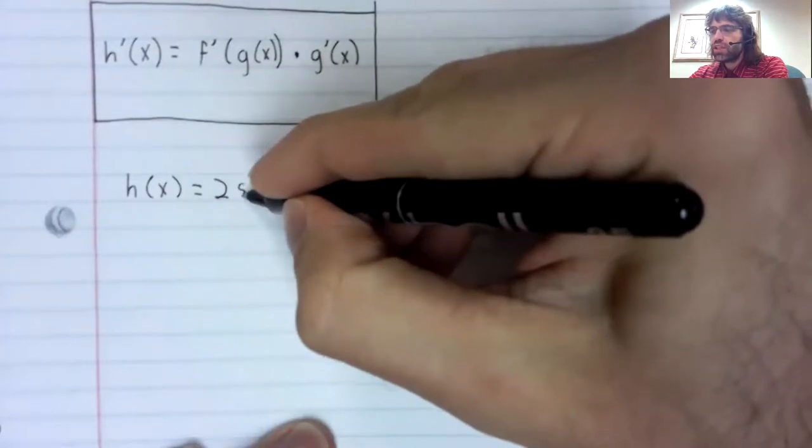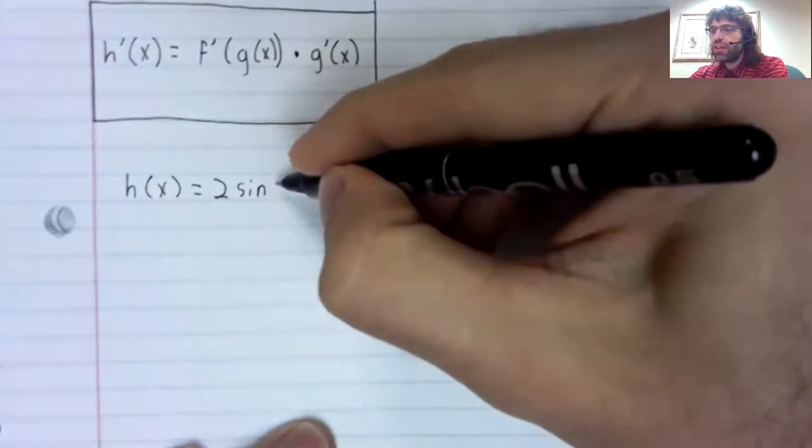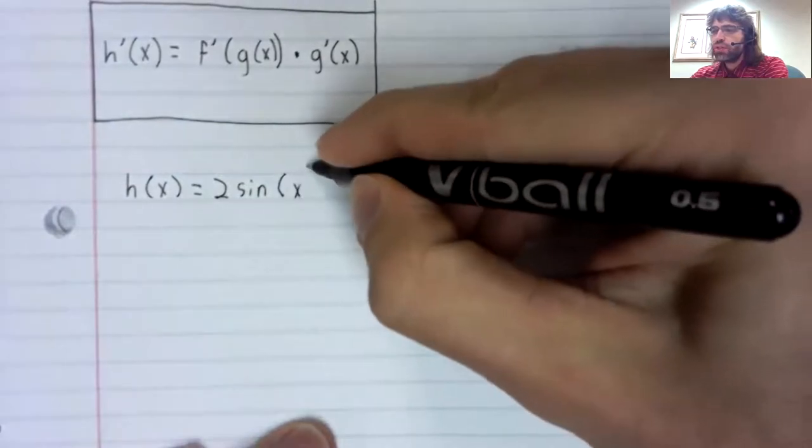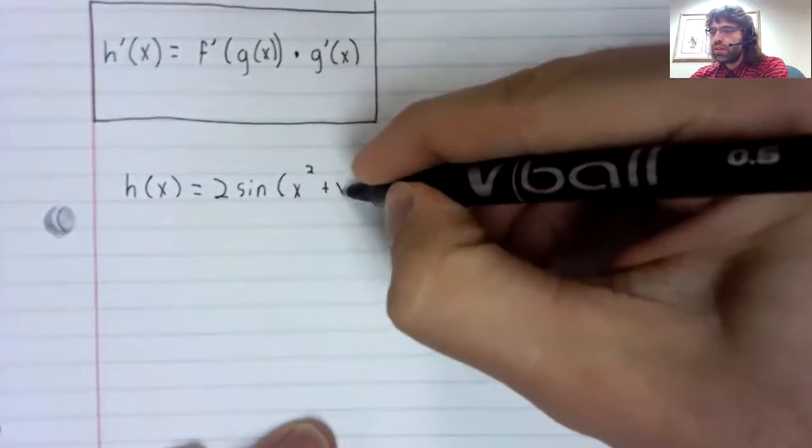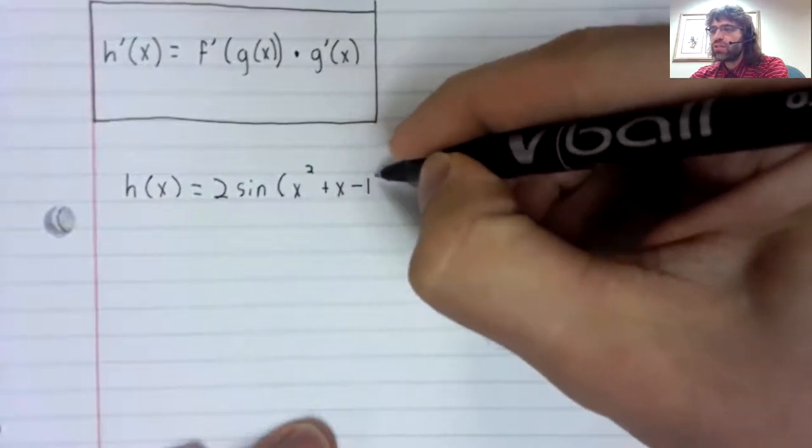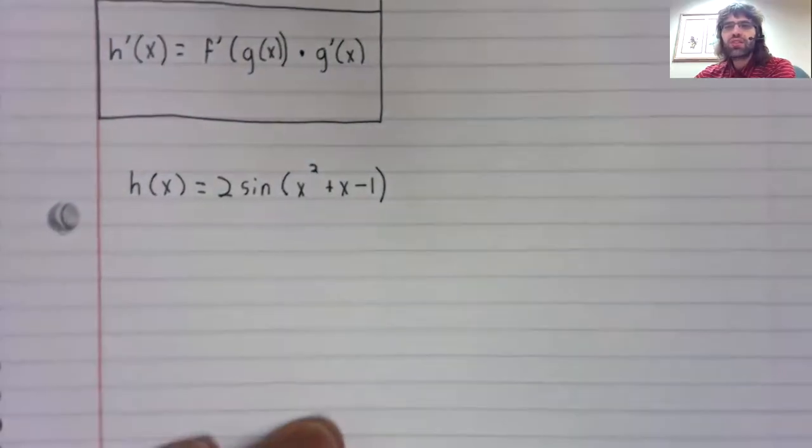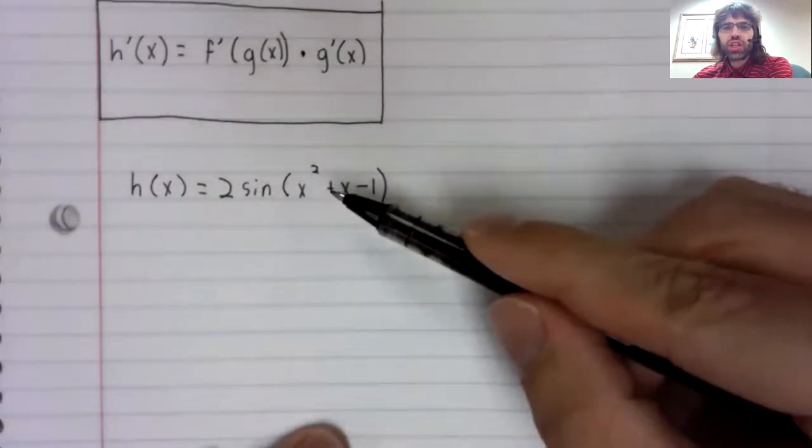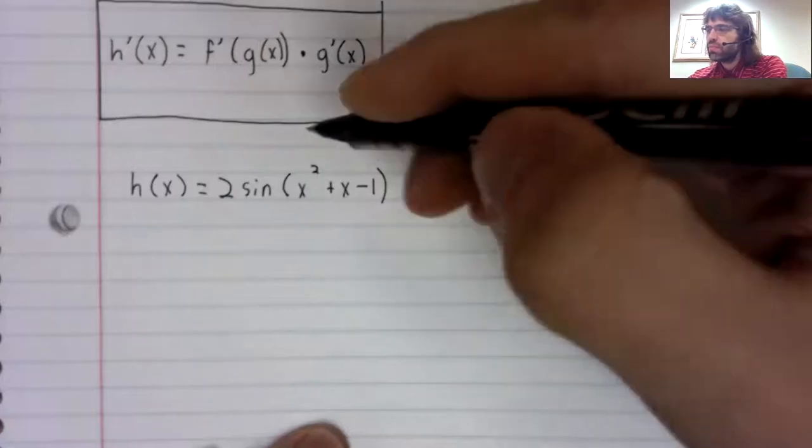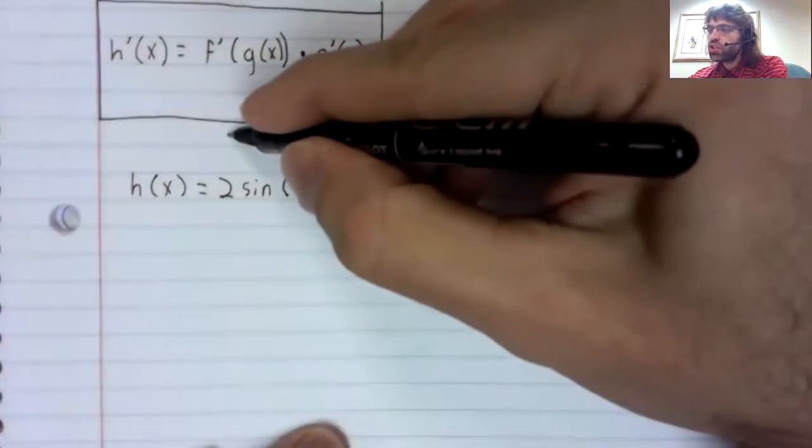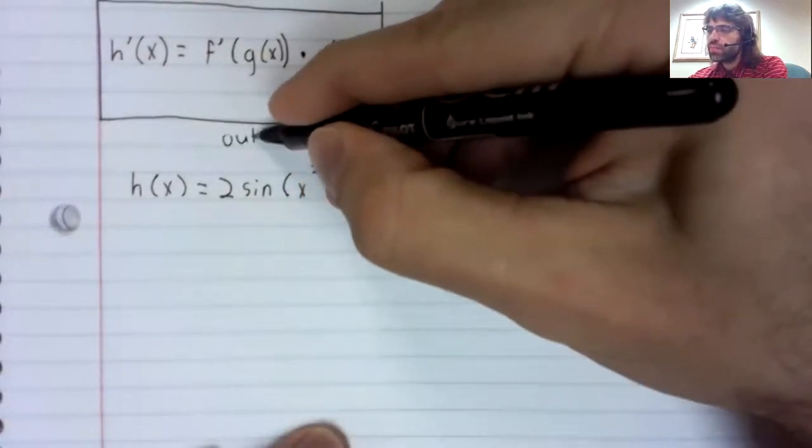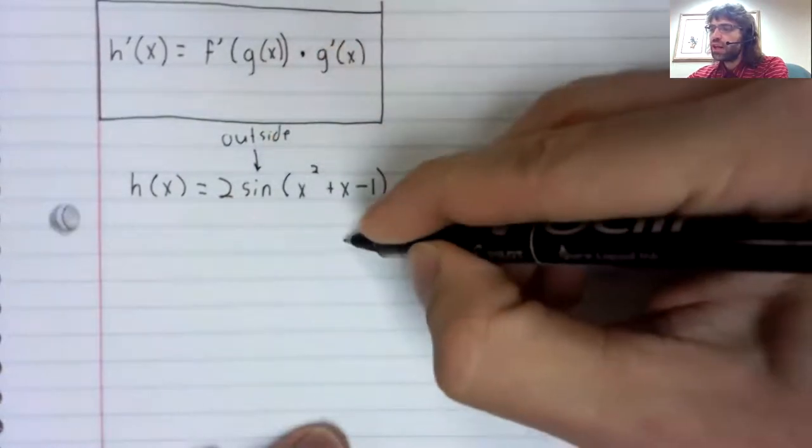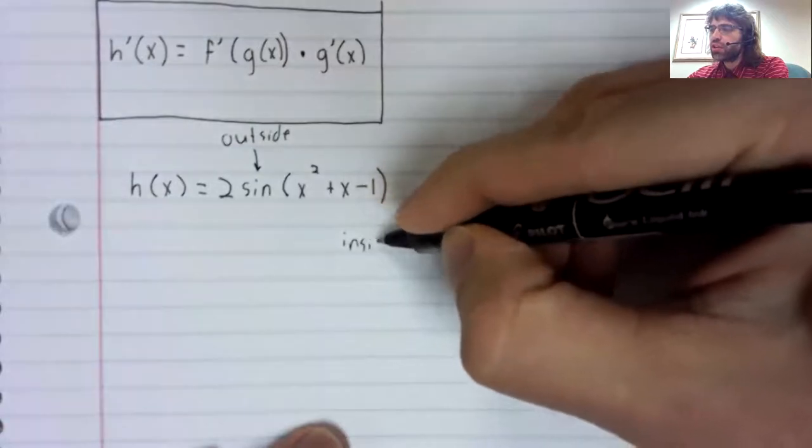You see, we're taking the sine of something. But we're not taking the sine of x. We're taking the sine of some function. This is composition.